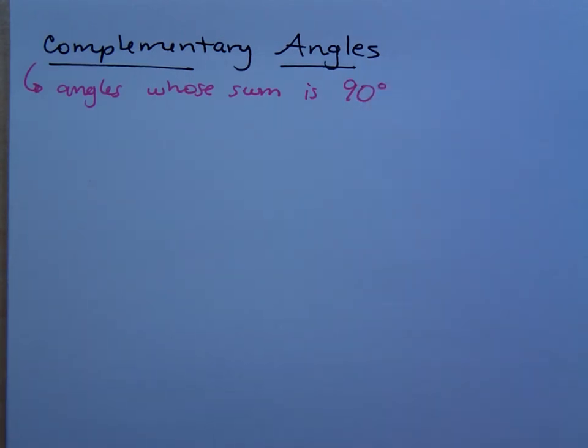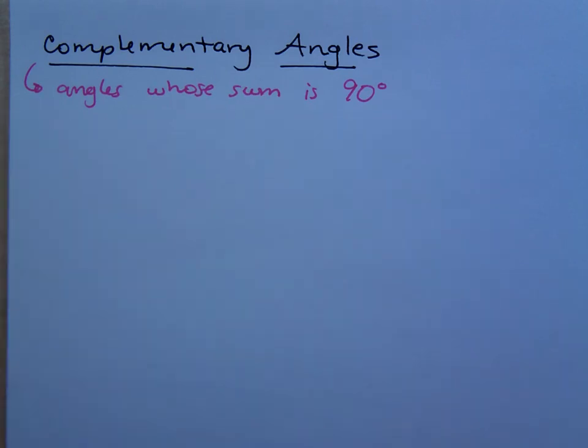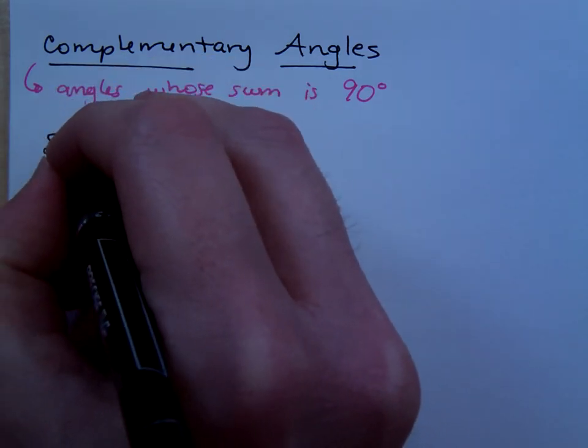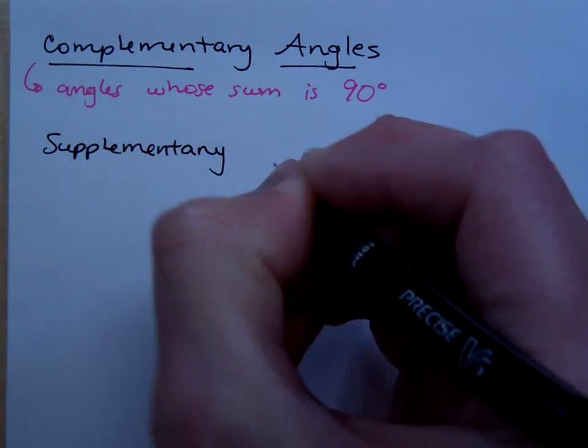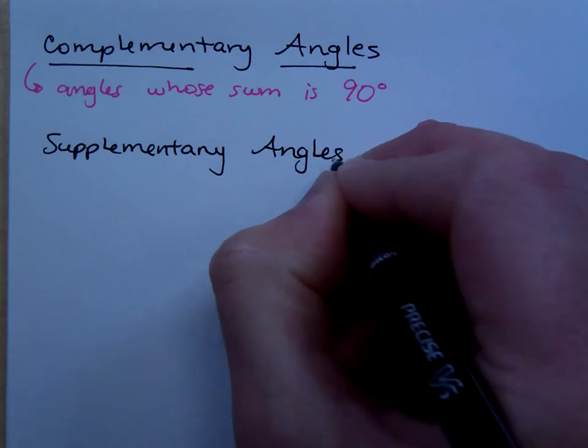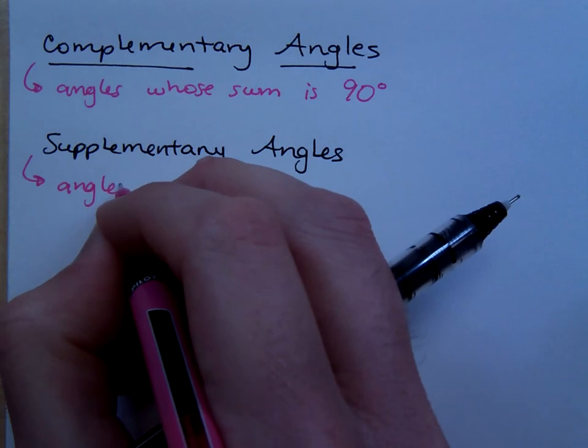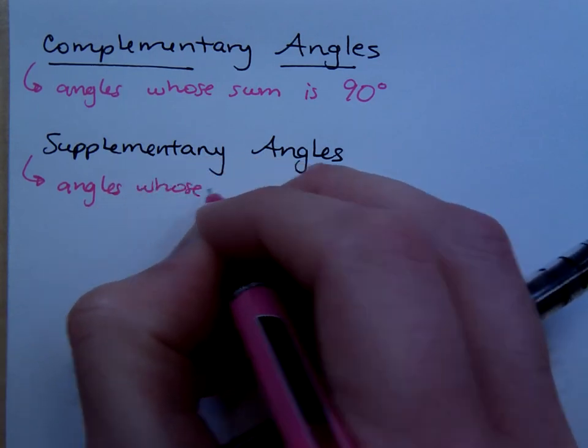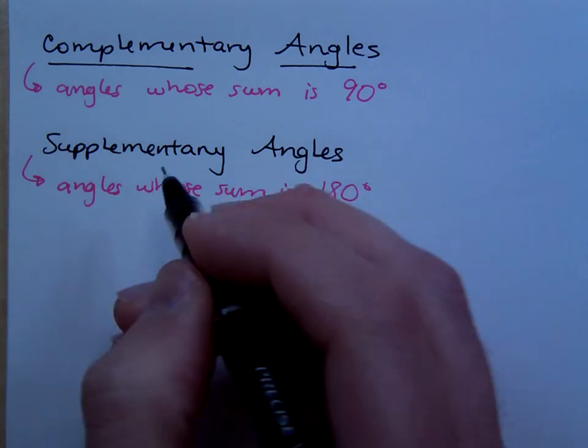What does that mean? That means if you add their angle measures, you get 90 degrees. That's what sum means - addition. Well, we also talk about supplementary angles. What do you think you know about supplementary angles? All right, these are angles whose sum is 180 degrees. That's supplementary angles.